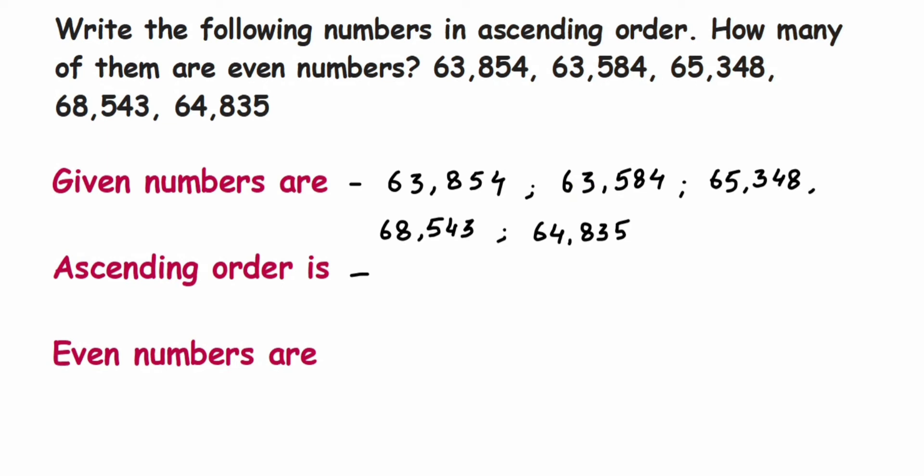So let's write down that answer. First will be 63,584, then the next one is 63,854. So the first two digits are over.